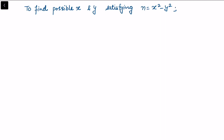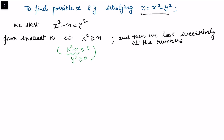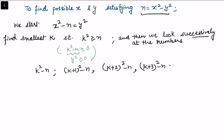The question is how to find possible x and y satisfying x² − y² = n, which we rewrite as x² − n = y². We want to find the smallest k such that k² is strictly greater than or equal to n. Then k² − n is greater than or equal to zero, which we can treat as y². We then look successively at k² − n, (k+1)² − n, and so on, increasing by 1 each time until the result is a perfect square.